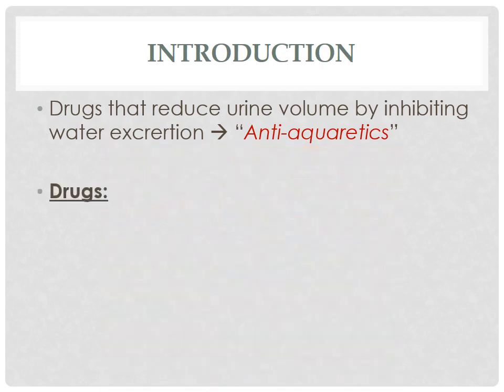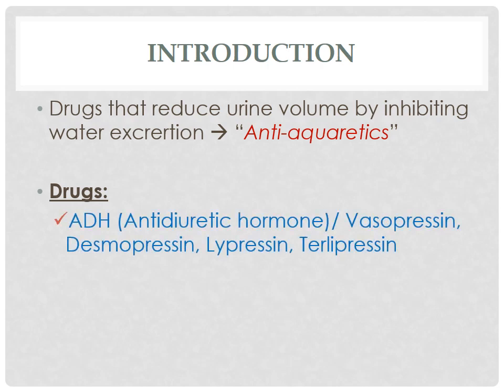The drugs with anti-diuretic effect, mainly in case of diabetes insipidus, include anti-diuretic hormone or ADH itself, which is also known as vasopressin and is released from the posterior pituitary gland along with oxytocin. ADH analogues are desmopressin, lipressin, and terlipressin.